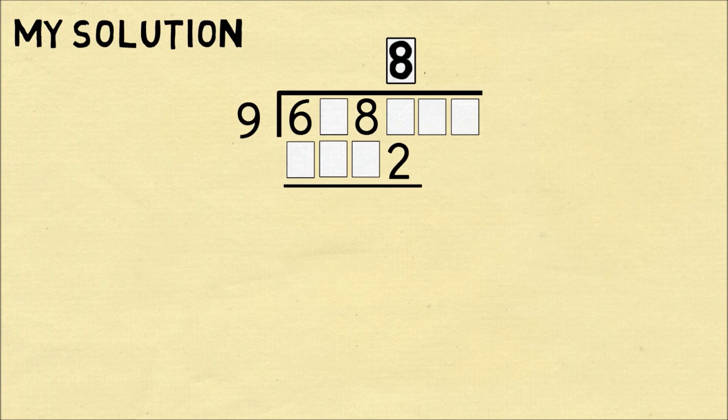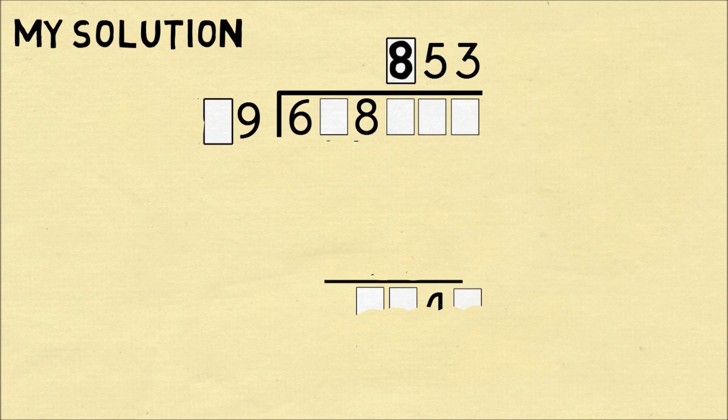And this is useful information because that means we know the result has to be 853. The next thing I would try and do is figure out the second digit next to the nine.